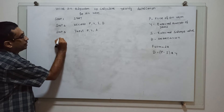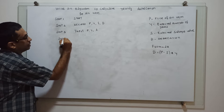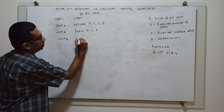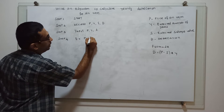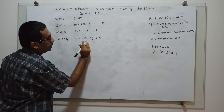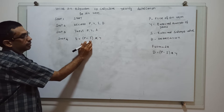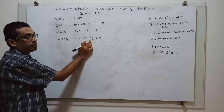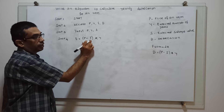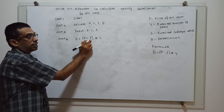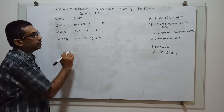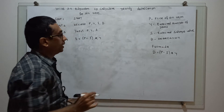Now I am calculating yearly depreciation. Step 4: Depreciation equal to P minus S star Y. That means P is the price of an item, S is the salvage value — the book value after depreciation is complete — into the expected number of years. So we get a value D, which is the yearly depreciation for an item.